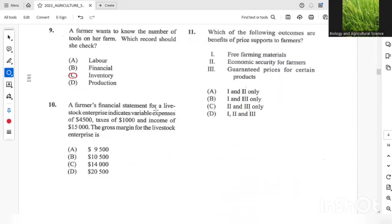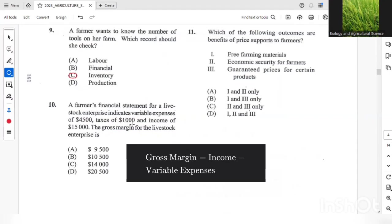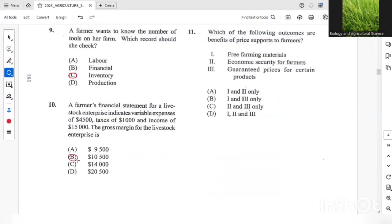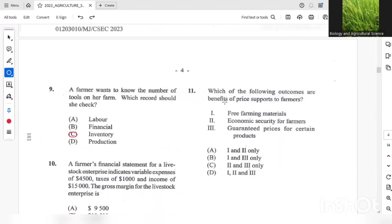Question 10, a farmer's financial statement for a livestock enterprise indicates variable expense of $4,500, tax of $1,000 and income of $15,000. The gross margin for the livestock enterprise is? The gross margin will be $10,500. It will be the income minus the variable expenses. Then which of the following outcomes are benefits of price support to farmers? The options that are correct should be 2 and 3, which would be economic security for farmers and guaranteed price for certain products. So C will be the most suitable answer for this question.